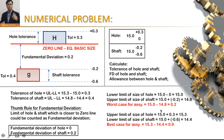Now let's calculate the two clearance cases. The worst case for assembly is when the hole is at its lower size and the shaft is at its higher size. The best case is when the hole is at its higher size and the shaft is at its lower size — giving maximum clearance. Calculating these gives clearances of 0.2 (minimum) and 0.9 (maximum). The allowance is 0.2 because that is the worst case clearance.